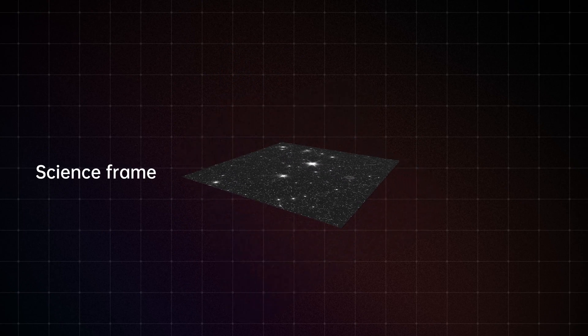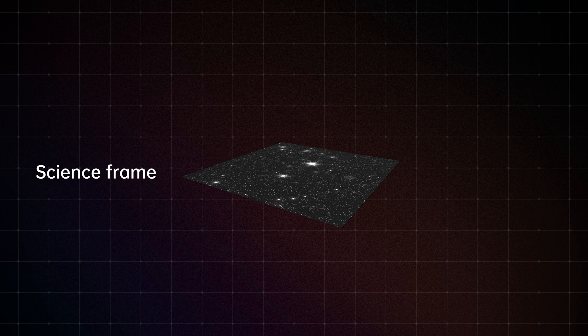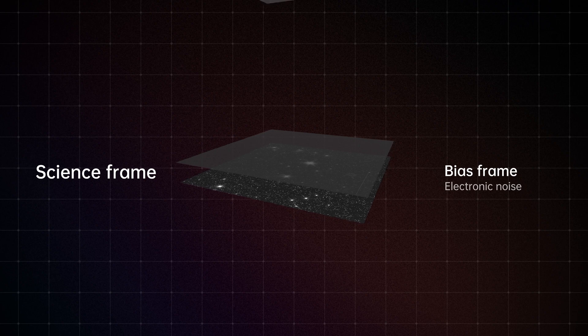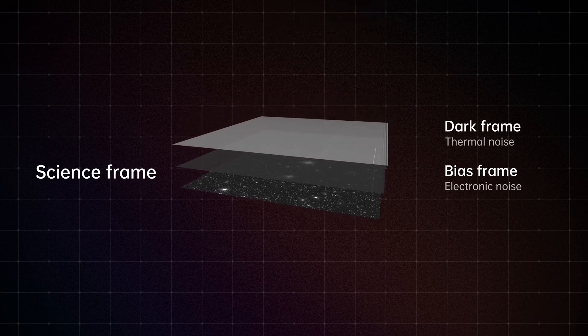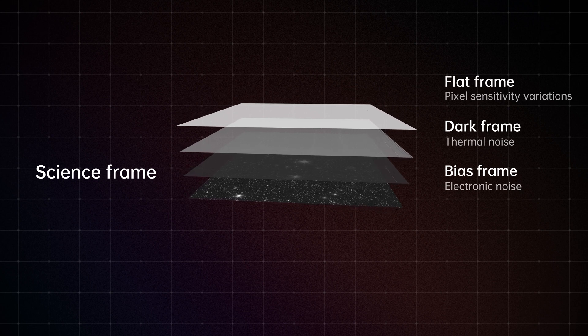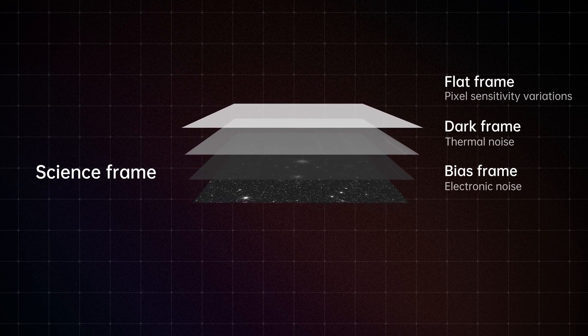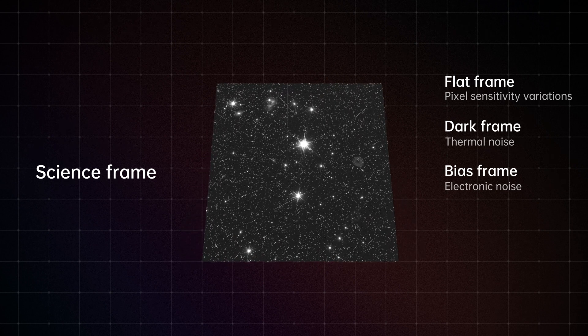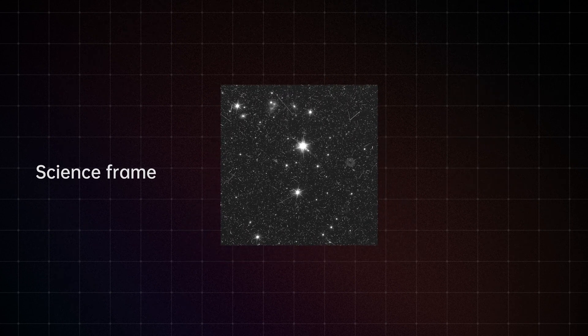We will introduce you to a simple strategy to solve these issues. When we observe space, we take different types of pictures with our telescope. Some show the stars and galaxies we want to study. But we also take extra pictures to help us make the main ones clearer. These extra pictures help us remove any little errors that come from our camera, making sure that what we see is as close as possible to what's actually out there in space.